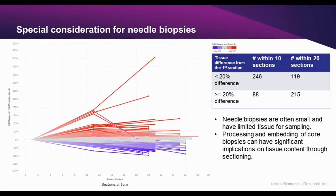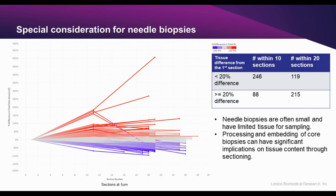Needle core biopsies have special considerations when considering multiple slides as they tend to be thinner with less representative tissue content. We looked at a number of needle biopsies to see if we could correlate nucleic acid yields to tissue density. At 10 sections away, approximately 26% of the biopsies had an area difference of greater than 20%. By 20 sections away, 64% of the core biopsies had a tissue area change of greater than 20%. Due to the nature of needle biopsies, it is less likely they would be suitable for multi-marker singleplex IHC studies that require spatial analysis.